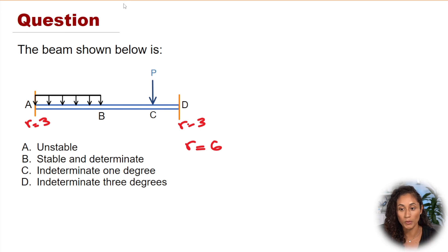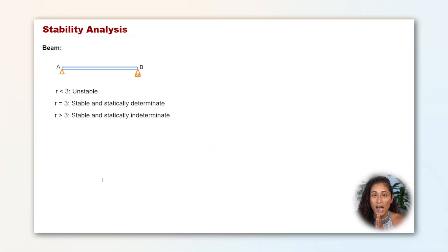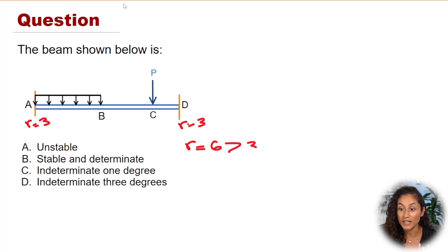Back to the problem. The next step we need to do is compare the six to three. Remember we covered this in the concept video. Six is greater than three, which means we have an indeterminate structure. If we take a look at the multiple choice, we know the answer is going to be either C or D, but we have to determine the degree of determinacy.